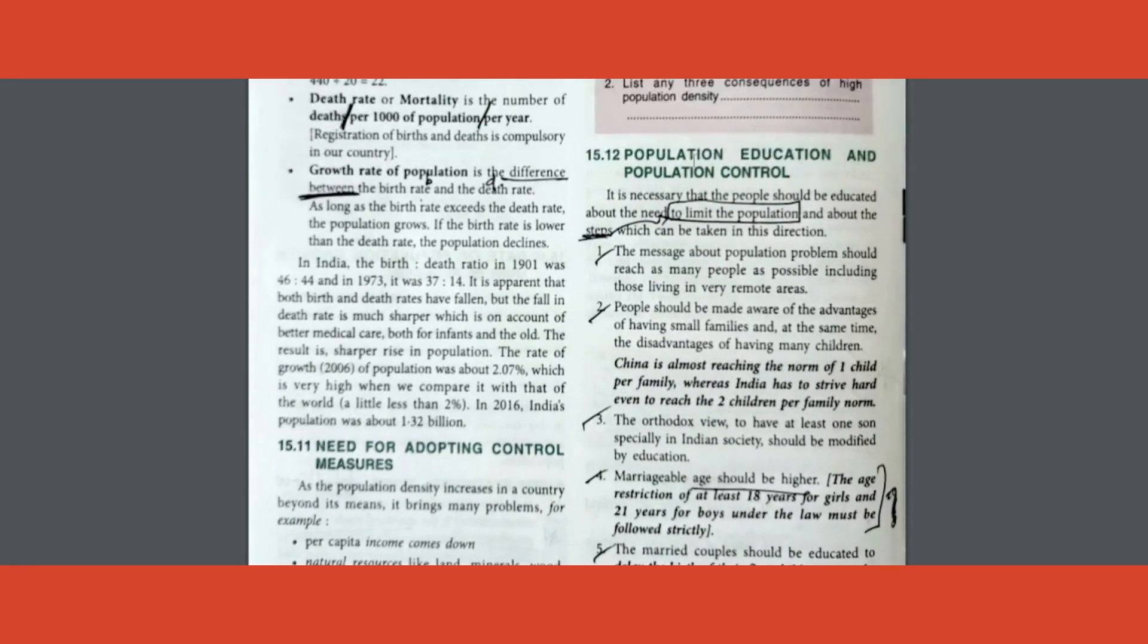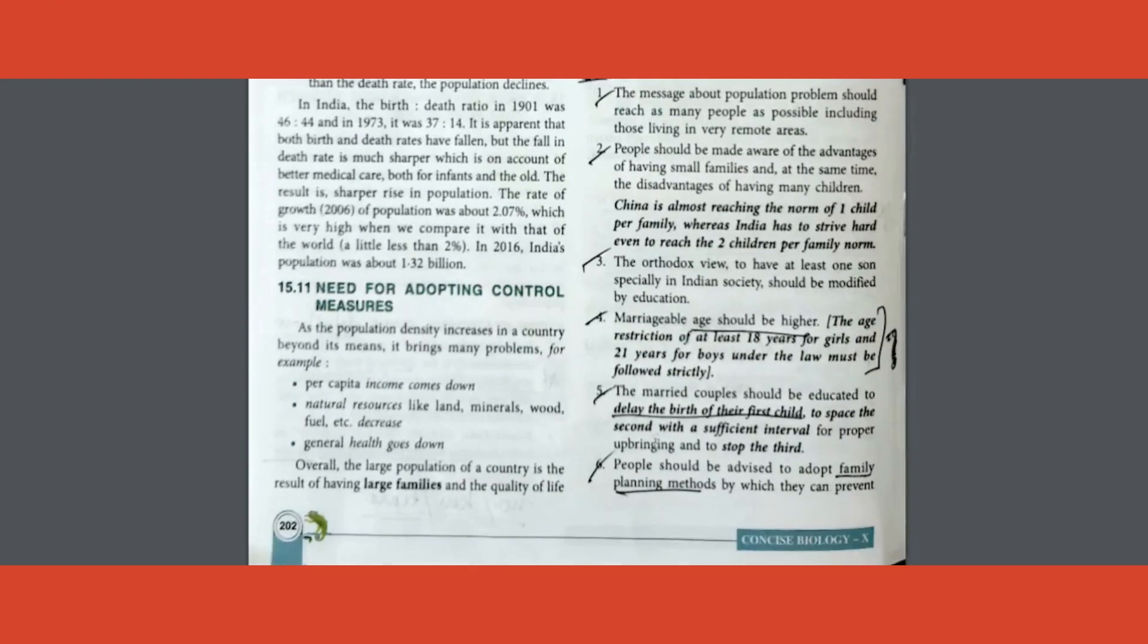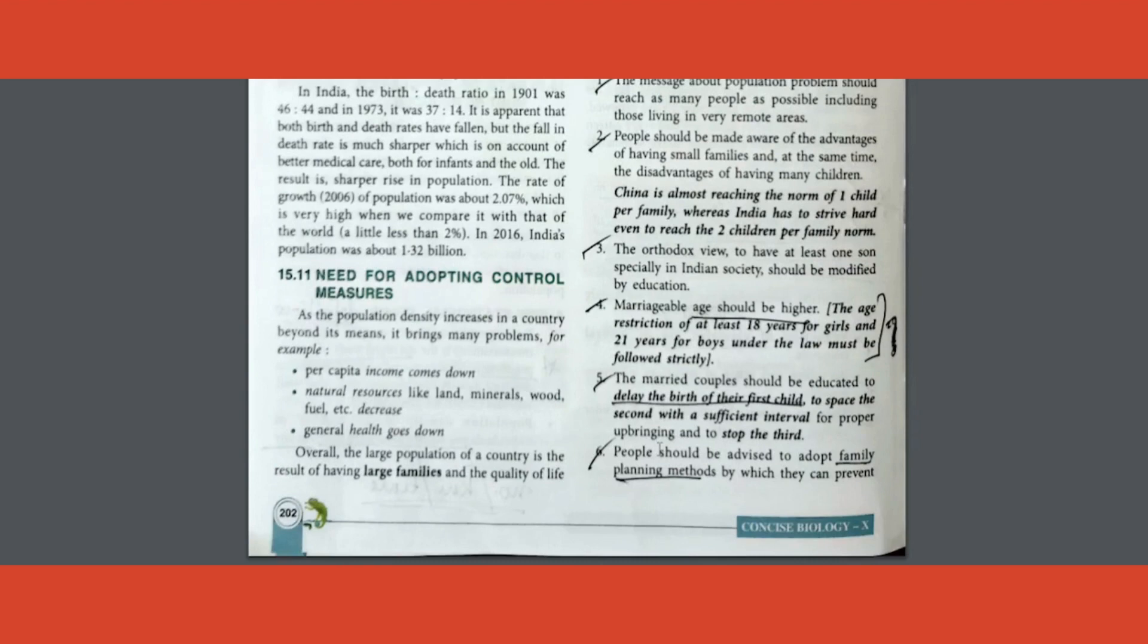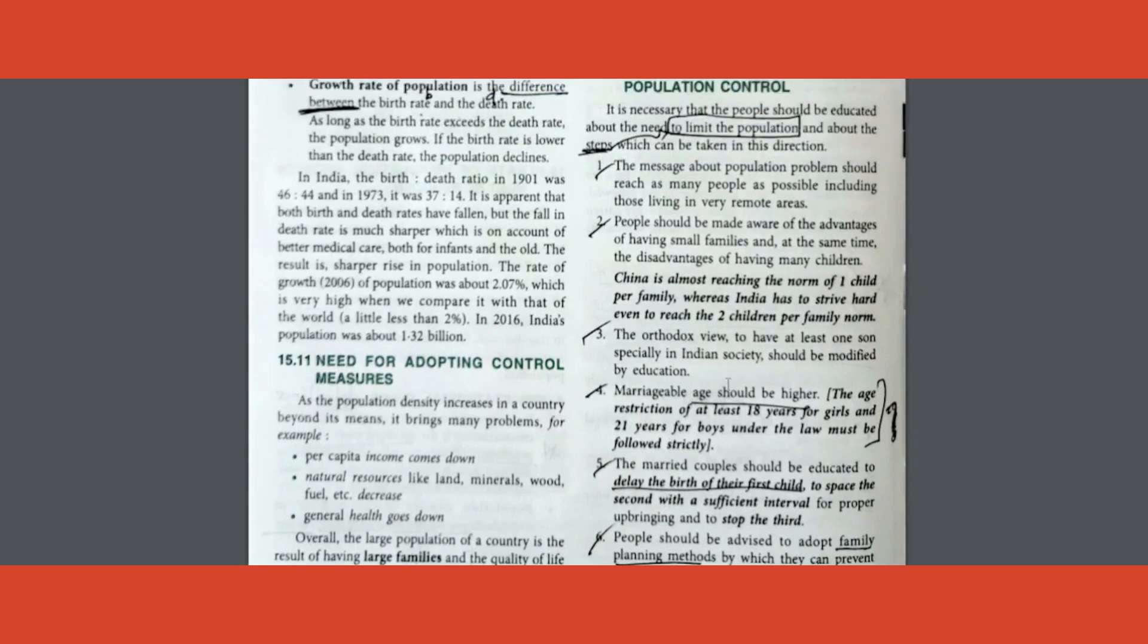As we come down here, there are population education and population control. What is it? How to limit or what are the steps to limit population? Under that, all the points are there. Read once. That is more than sufficient, you should be able to write. Focus on marriageable age. This is again one mark question: 18 for girls and 21 for boys.